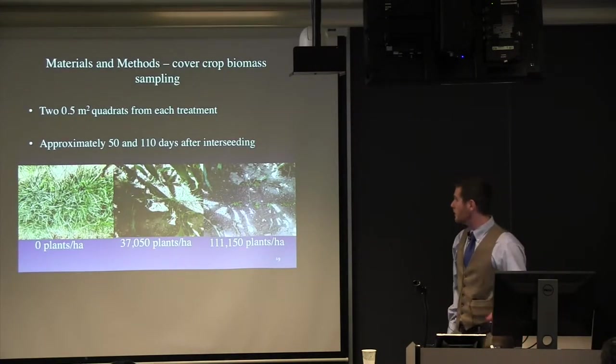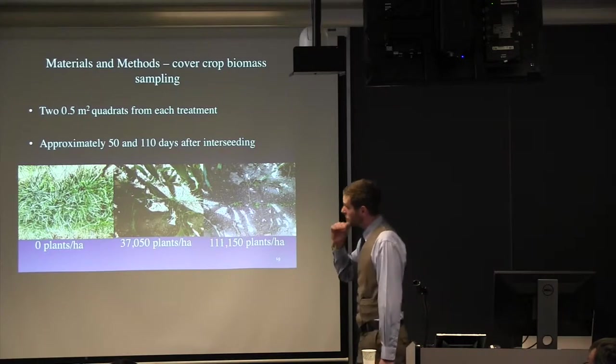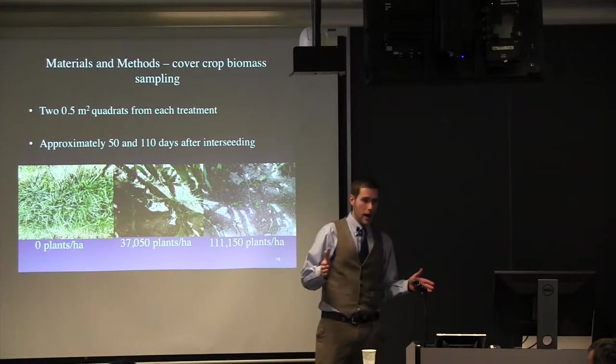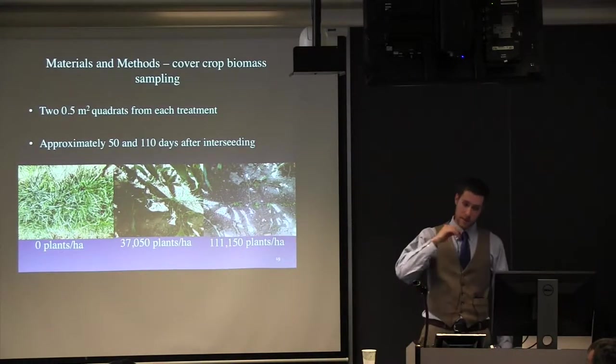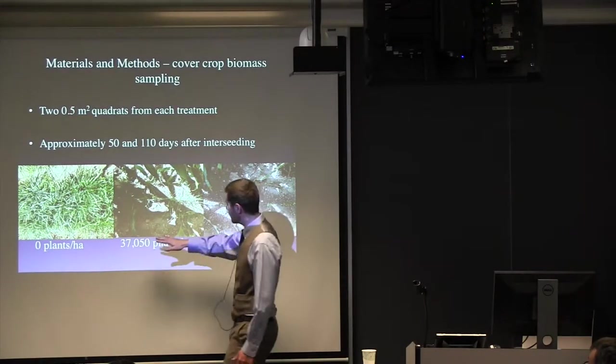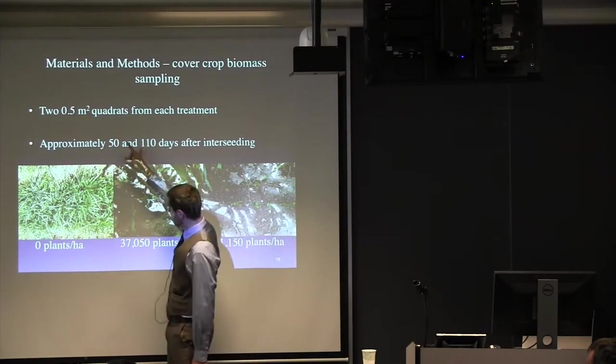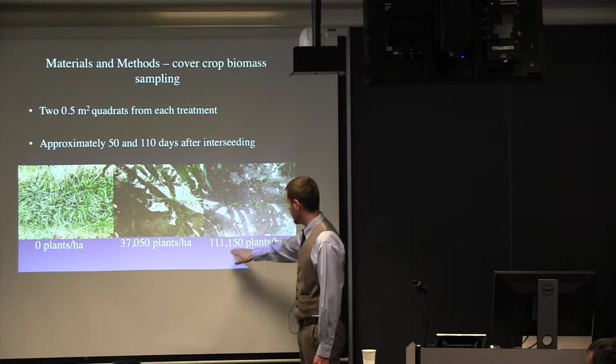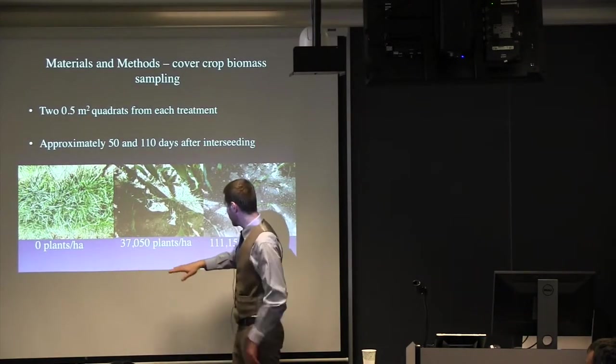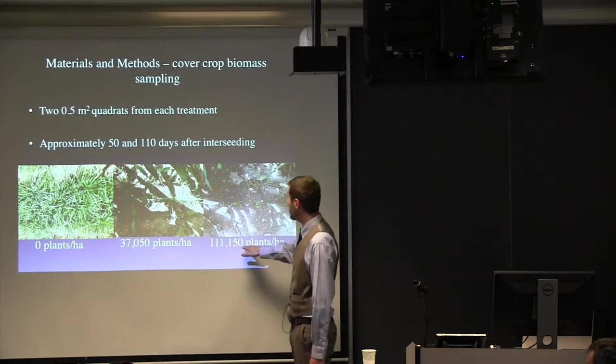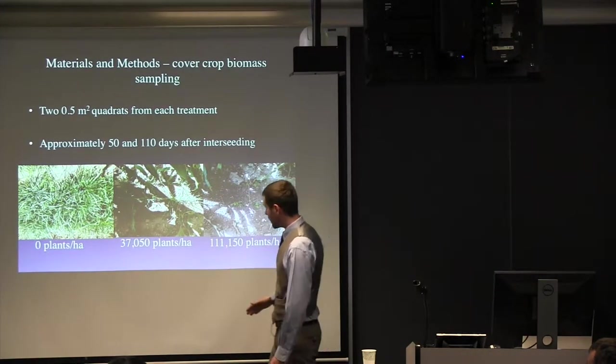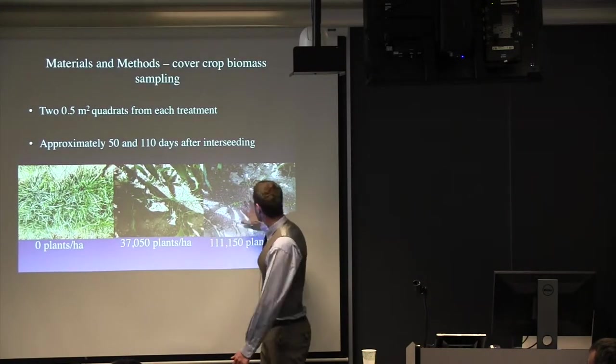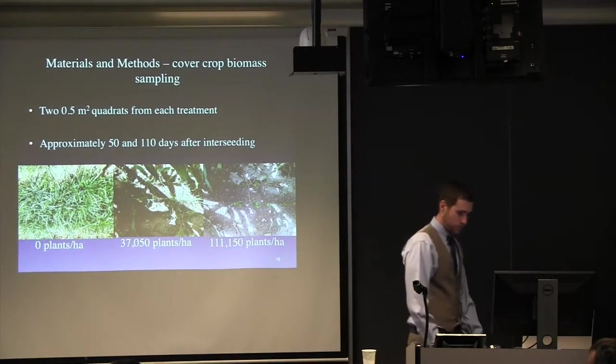Now, biomass of the cover crops were sampled at two dates. This is approximately 50 and 100 days after we interseeded, just from two quadrats in each of those treatments that we talked about earlier. I really like this series of photos. So, this is about halfway in between these two sample dates. At zero plants per hectare, 37 plants per hectare, and 111. So, that's our control, excuse me, low and high planting density of the corn. And you can see this nice difference in the biomass of the cover crop and the amount of light that's getting down to the cover crop.